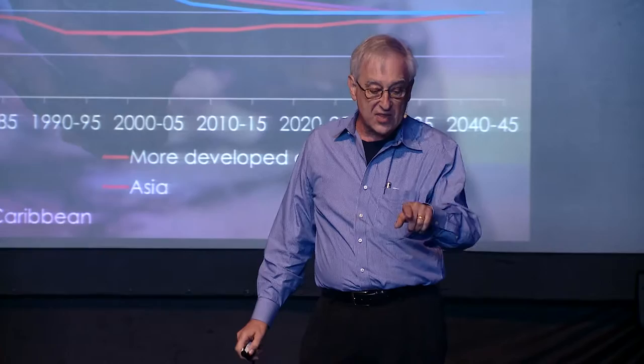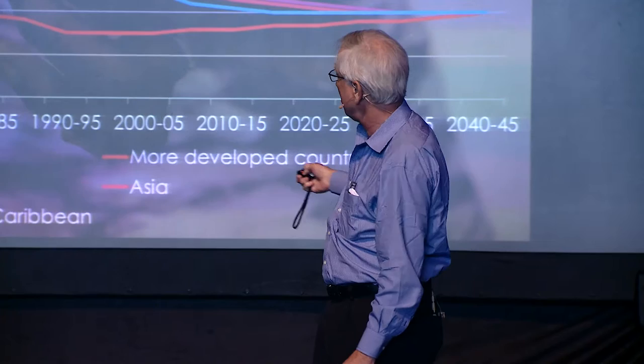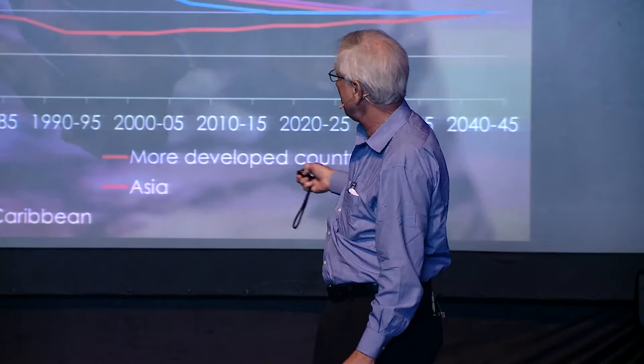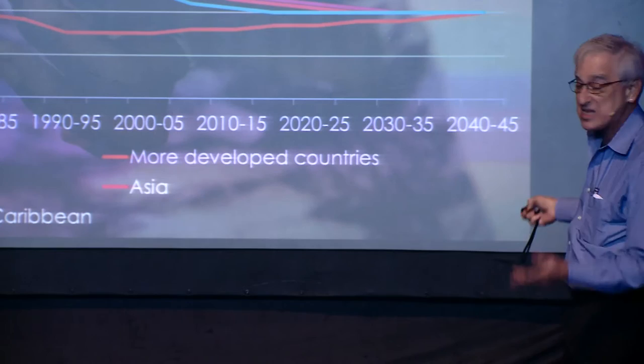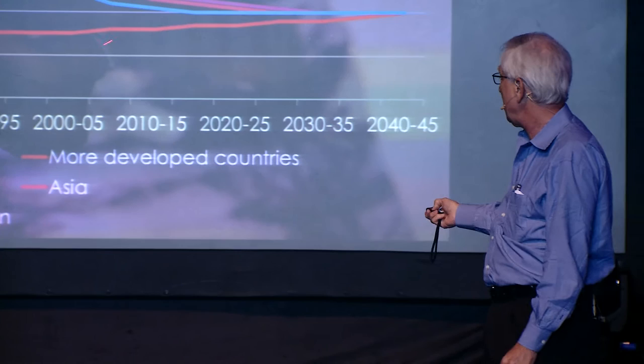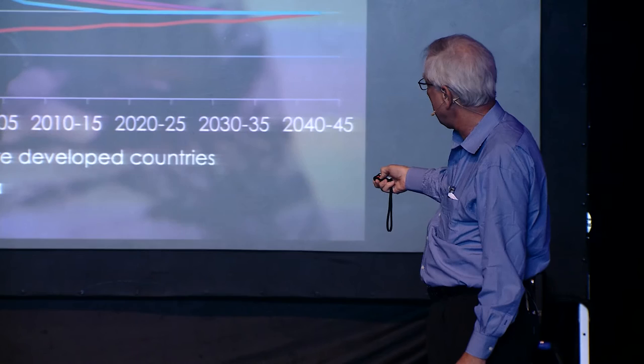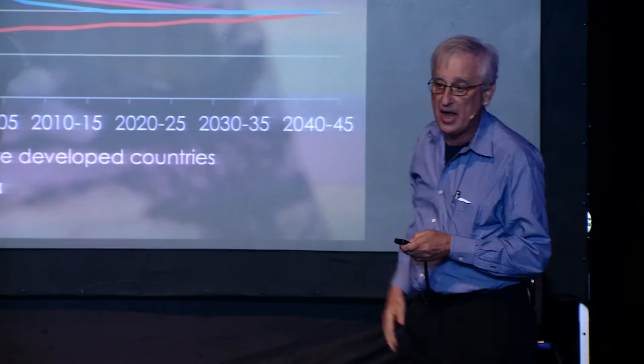This is the total fertility rates in different regions in the world. The lavender line in the center is the world; the low line is developed countries. This is Africa, and this is Latin America and Asia. You can see over time there's been a convergence — the desired family size is falling rapidly. The small family norm is becoming universal, and all the regions are down below three. You can see how rapidly the yellow line in Africa is also falling. This is voluntary family planning — it's what people want. There are many megatrends driving smaller desired family size.